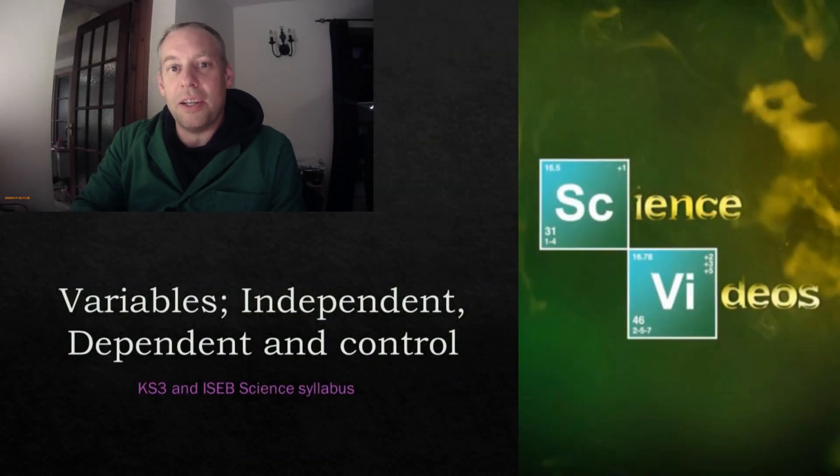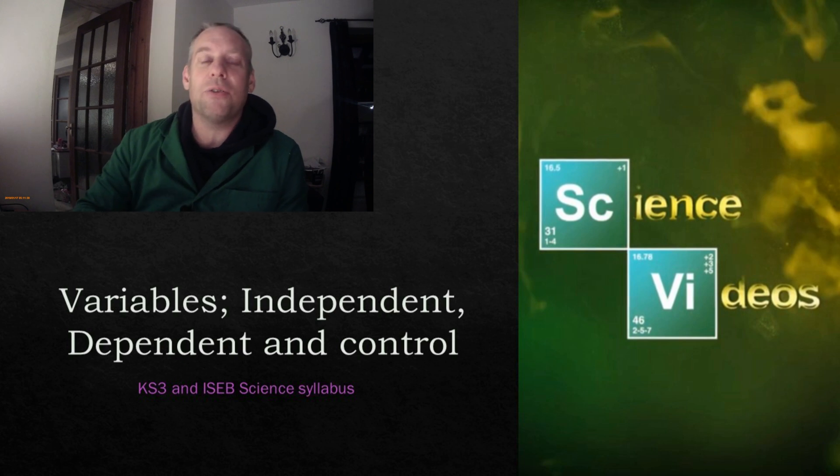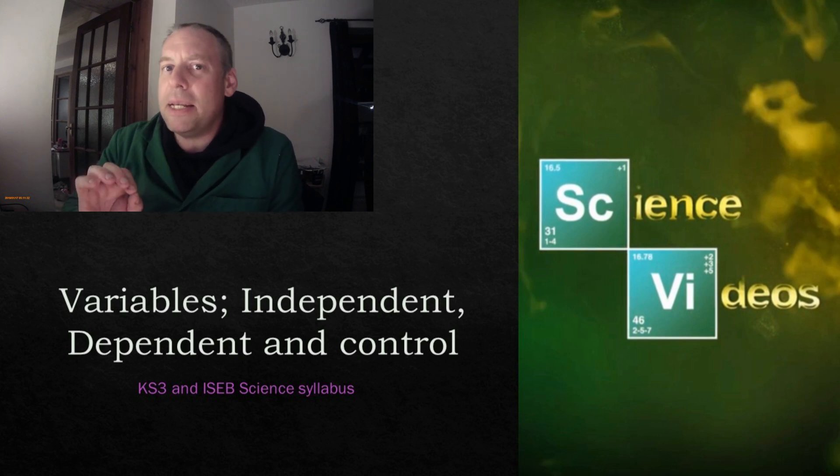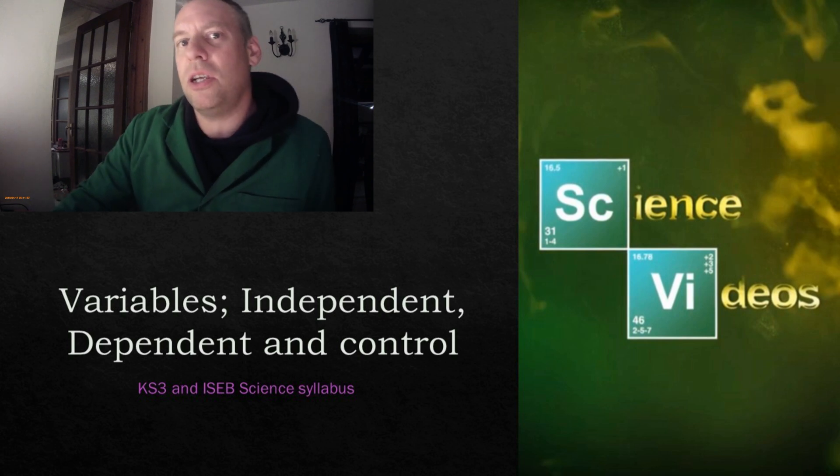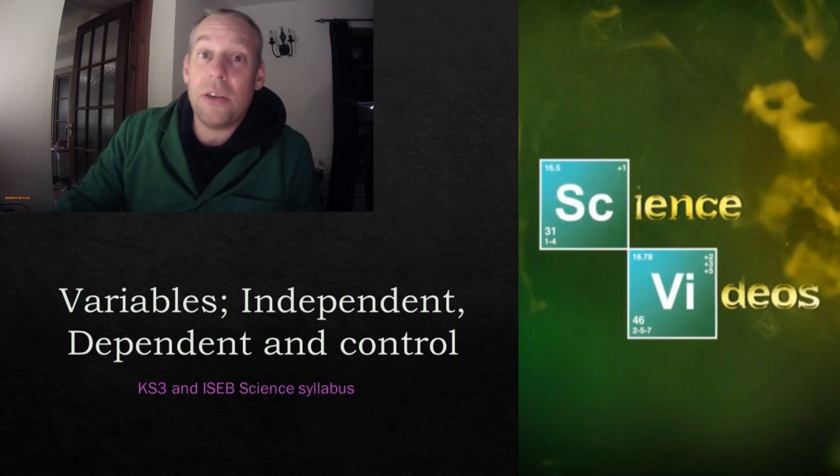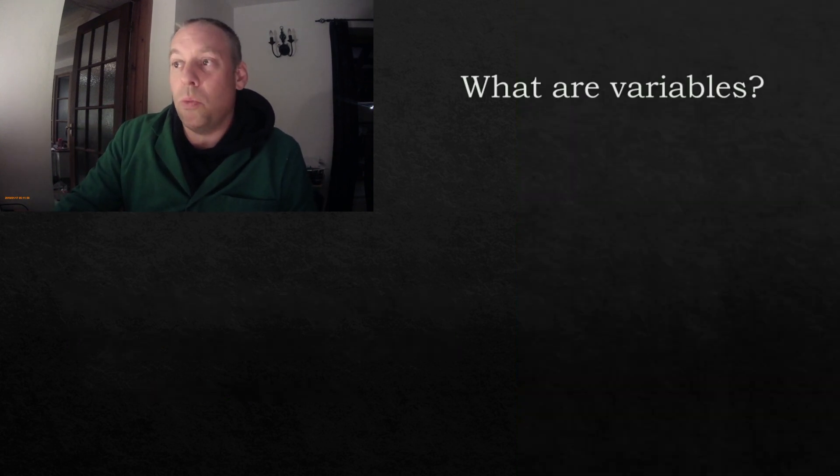Hello and welcome to another edition of James and Chris Science Videos where today I'm going to be looking at how science works and I'm going to be looking particularly at investigations. Now within investigations there are three variables we need to consider. They are called independent variable, dependent variable, and control variable. This video is going to talk through all three and talk through a worked example. I'm going to do a little experiment in front of you, a very silly one, but a quick experiment just to highlight these. So I'll start off with the question: what are variables?